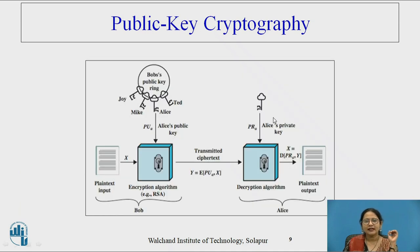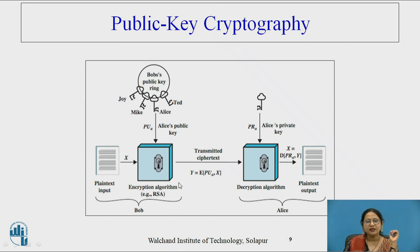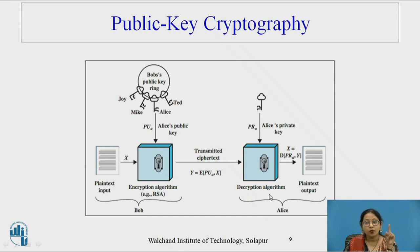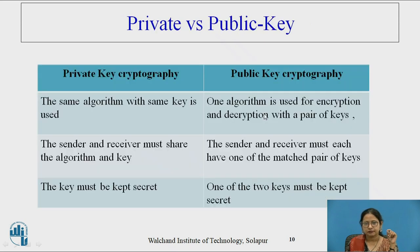In the public key cryptosystem diagram: plaintext, after applying the encryption algorithm with the public key, is converted into ciphertext. At the receiver side, the decryption algorithm with the receiver's own private key converts it back to the original plaintext.